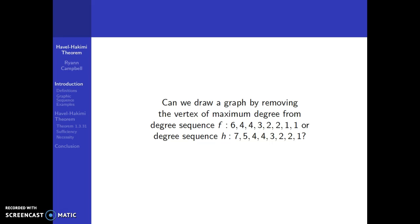Our driving question is: can we draw a graph by removing the vertex of maximum degree from these two sequences? From sequence F, the vertex of maximum degree has degree 6, and in sequence H, the maximum degree is 7. So we want to know, if we remove those two vertices, can we draw graphs?